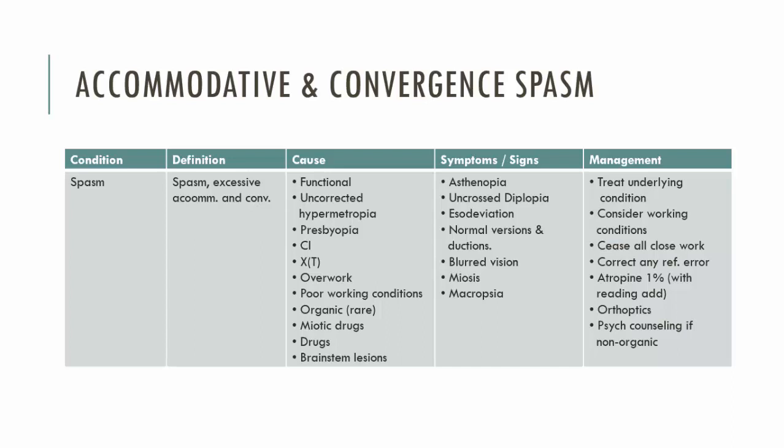In terms of managing the patient, we need to treat any underlying condition and consider whether close-up work or working conditions are of concern. One of the best approaches is to stop the patient accommodating by paralysing accommodation. To do this, you would prescribe 1% atropine daily — the patient instils it every day for at least a couple of weeks, possibly a month. Atropine will also cause blurred vision, so it's important to ask patients to purchase a pair of reading glasses for the period in which they are using the atropine. You then wean the patient off the atropine and hopefully they can maintain normal accommodation thereafter.